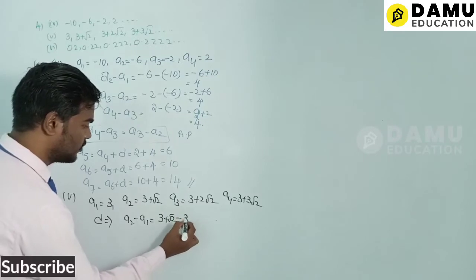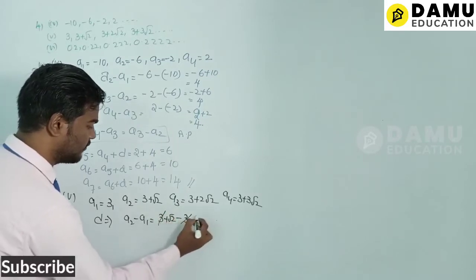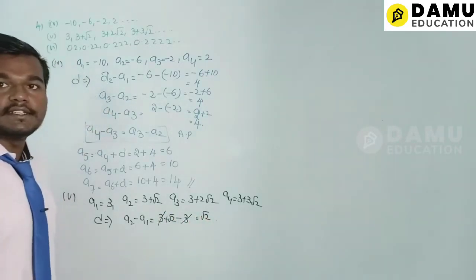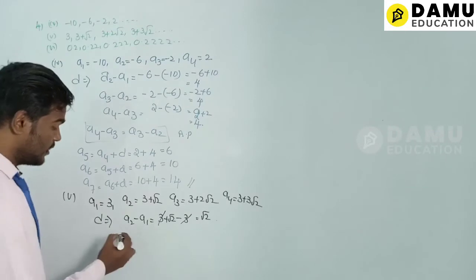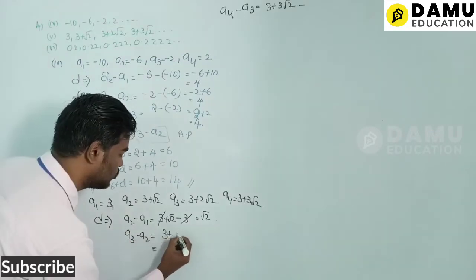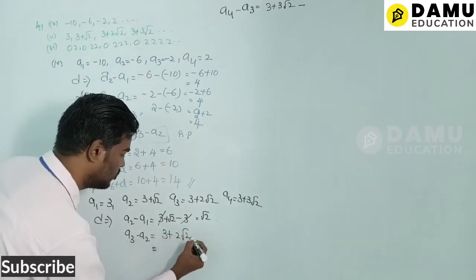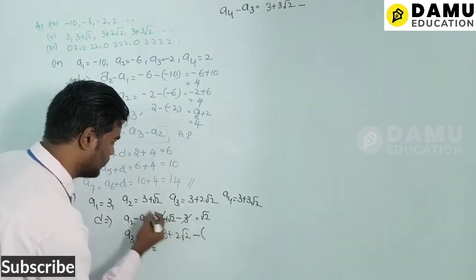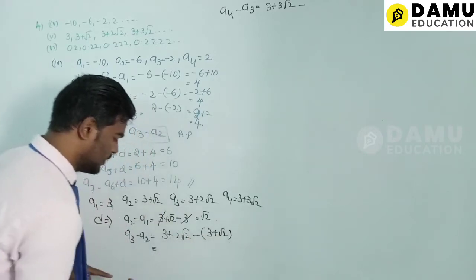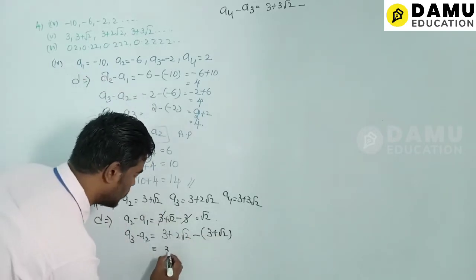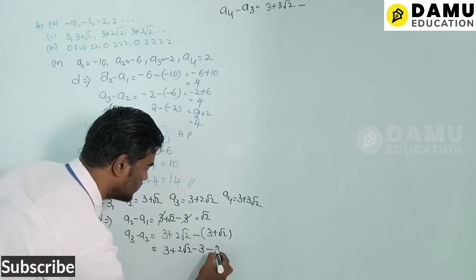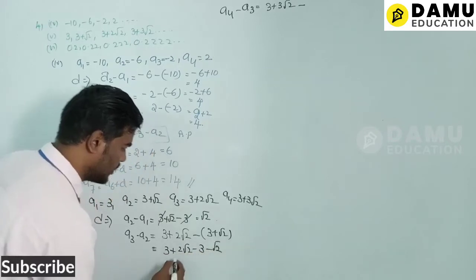d = a2 − a1 = (3 + √2) − 3 = √2. Then a3 − a2 = (3 + 2√2) − (3 + √2) = 3 + 2√2 − 3 − √2.